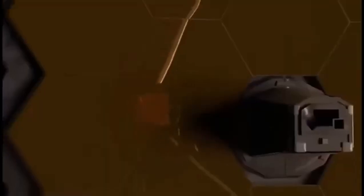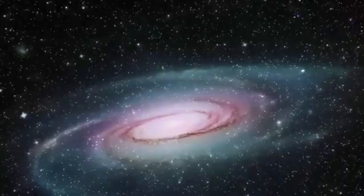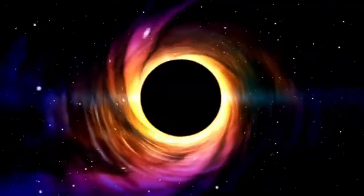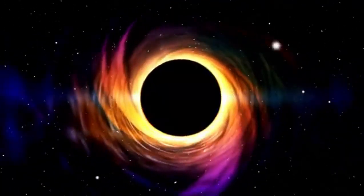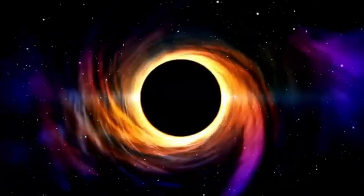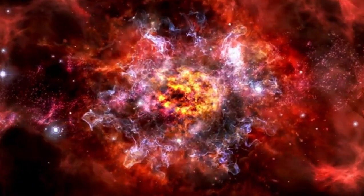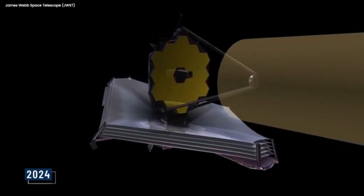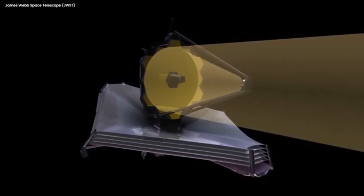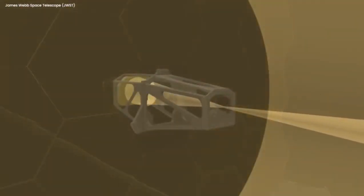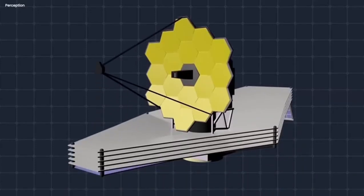Coming back to Proxima b, its mass is known to be equivalent to 1.07 Earths. Interestingly, it only takes 11.2 days to complete one orbit of its star. Compared to our 365.25 days, you can estimate the size of the star Proxima b is orbiting. Staggeringly, under the measurement of the entire electromagnetic spectrum, the star has a total luminosity of only about 0.16% that of the Sun.